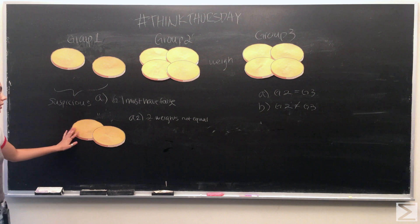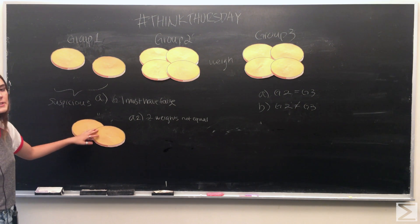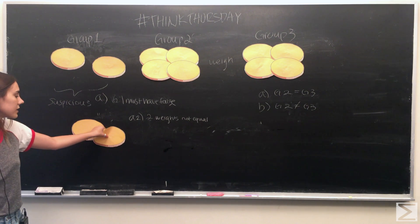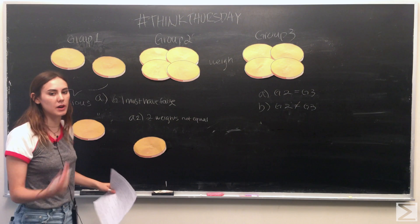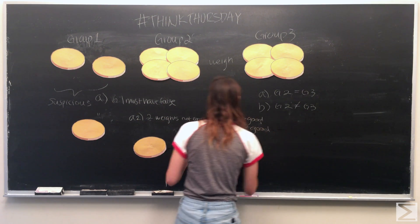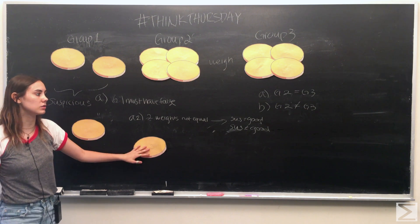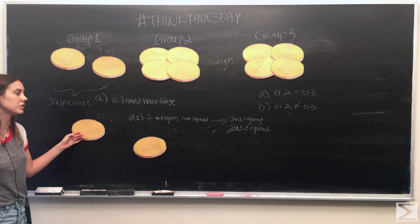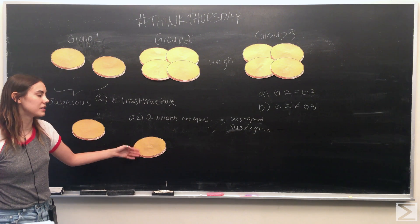Moving on to case A2, where you measure the two coins and they are not equal — you know that one of those coins has to be the false coin. We do something similar to A1: measure one of these suspicious coins against any of the good coins. You have two outcomes: either the suspicious coin equals the good coin, making it a good coin and the remaining suspicious coin therefore the false coin, or the suspicious coin does not equal the good coin, meaning that suspicious coin is the false coin.